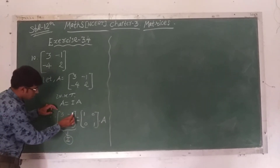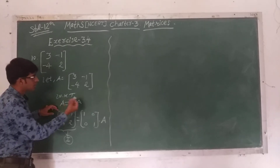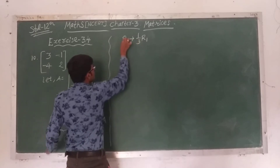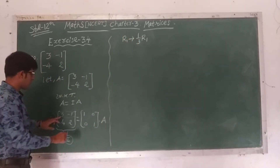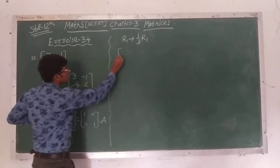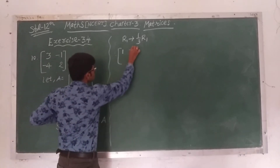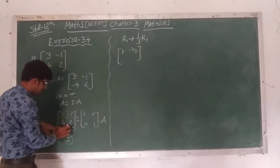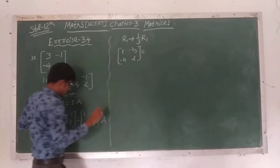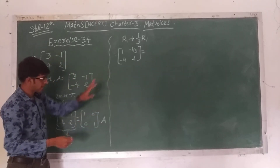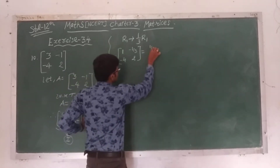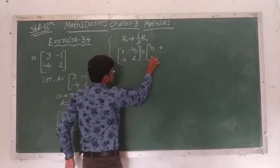So we have to divide the first row by 3. R1 becomes (1/3)R1. So the answer will be 3 divided by 3 = 1, minus 1 divided by 3 = -1/3. The second row remains [−4, 2]. The same operation we have to apply on the right hand side, so we get [1/3, 0; 0, 1] times A.